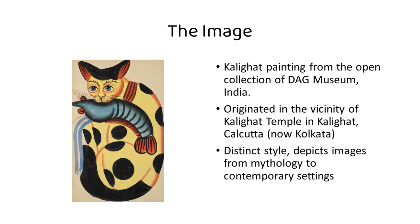Now that we are equipped with the details of WebAR, let's dive right into the project. The first step was to select an image. I have chosen a Kalighat painting from the open collection of DAG Museums in India. Kalighat painting originated in the 19th century in the vicinity of Kalighat Temple — thus the name Kalighat. It was located in the Kalighat region of Calcutta, which is now Kolkata. Initially these paintings started as souvenir items taken by devotees to the temple, but later developed into a very distinctive style of painting.